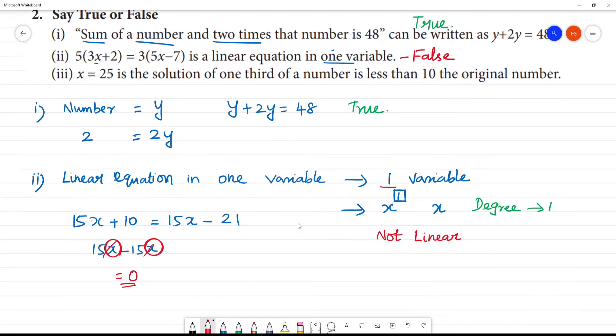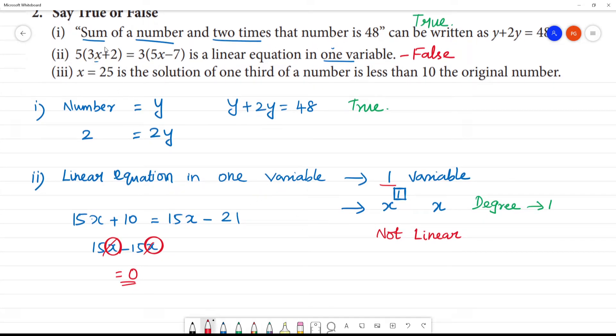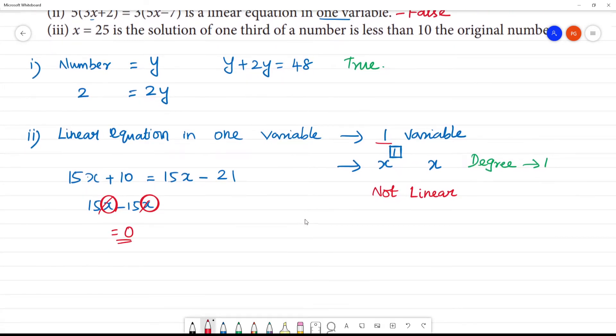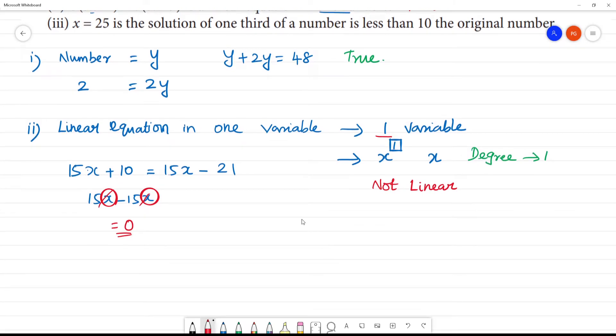Next: x is equal to 25 is the solution of one third of a number is less than 10 the original number. So one third is equal to x. This solution: the number is x.